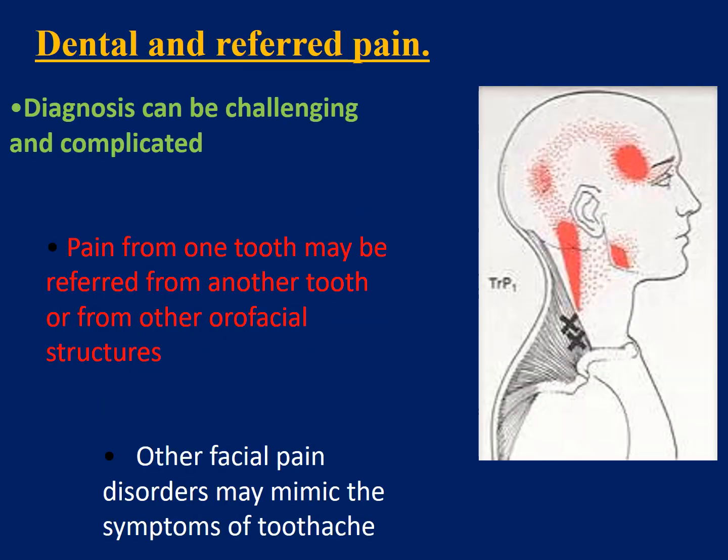Dental and referred pain diagnosis is very challenging and complicated because the dental area is surrounded by many structures such as muscles, vascular tissue, and joints. Pain from one tooth may be referred from another tooth or from other orofacial structures, and other facial pain disorders may mimic the symptoms of toothache. It is therefore important to use vitality tests to determine whether the origin is dental or from another site.